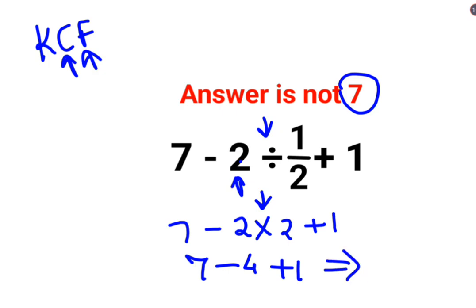So here 7 minus 4 is 3 plus 1. The answer for this question is supposed to be 4. So I hope this is very clear to everyone.